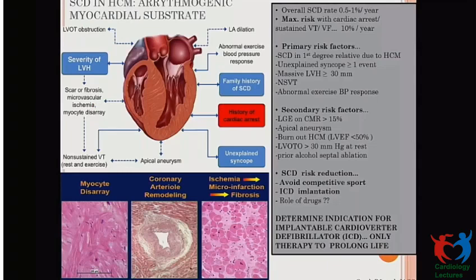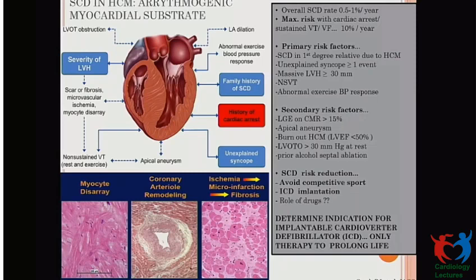Sudden cardiac death in HCM arises from an arrhythmogenic myocardial substrate due to myocardial disarray, coronary artery remodeling, microinfarctions, and fibrosis. The overall SCD risk is 0.5 to 1% per year, but maximum risk — up to 10% per year — is in patients with prior cardiac arrest or sustained VF. Primary risk factors are SCD in a first-degree relative, unexplained syncope, massive LVH more than 30 mm, NSVT, and abnormal BP response. Other features like LGE on CMR, apical aneurysm, burned-out HCM, and LVOT gradient more than 30 mmHg also have a role. Avoiding competitive sport and ICD implantation when appropriate are the mainstays of preventing SCD.